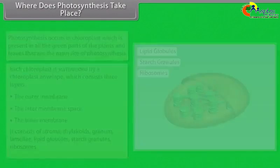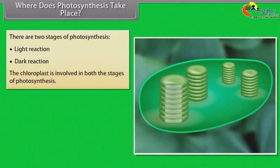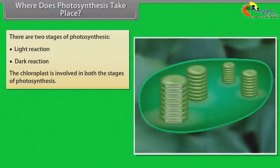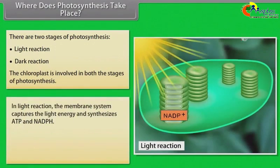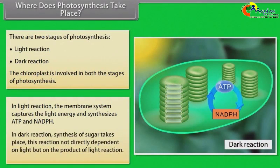There are two stages of photosynthesis. The first stage is light reaction and the second stage is dark reaction. In light reaction, the membrane system captures light energy and synthesizes ATP and NADPH. Whereas in dark reaction, synthesis of sugar takes place. This reaction is not directly dependent on light but on the products of light reaction.